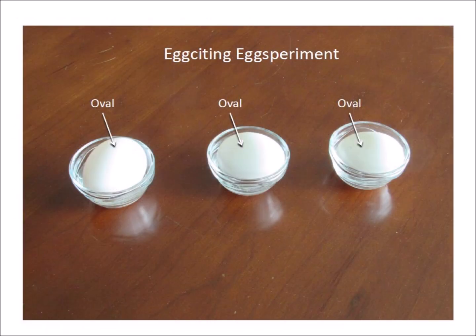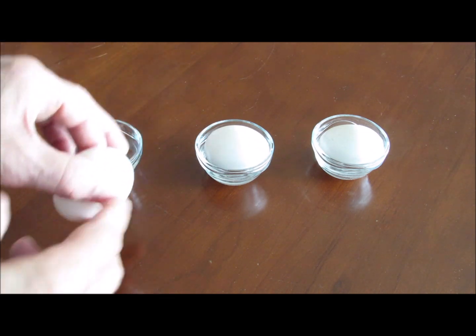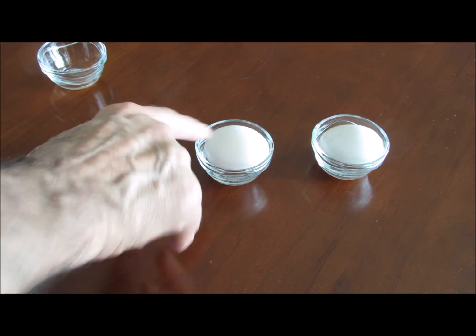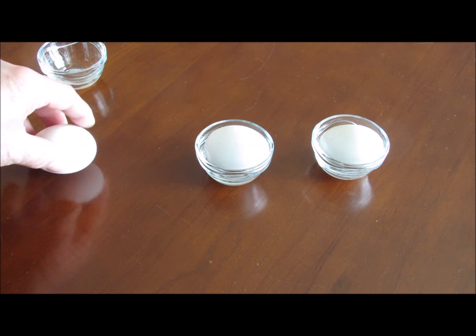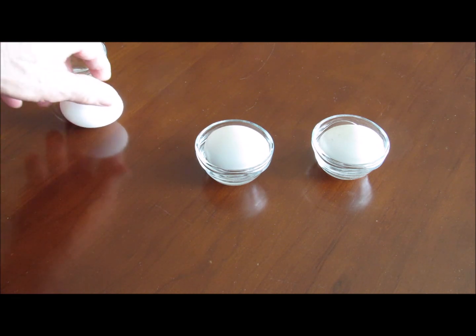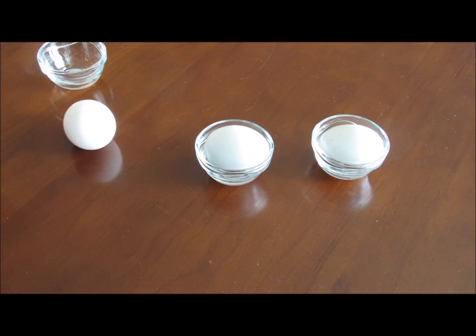We now come to an egg-citing egg-speriment with ovals that shows that every egg has a surprise inside. We take the first egg on the left and we try to spin it. The egg spins slowly and sometimes it does not spin well at all.